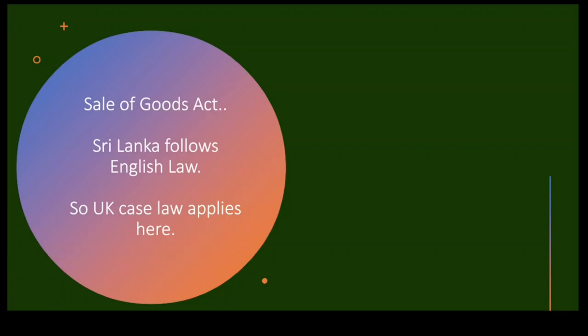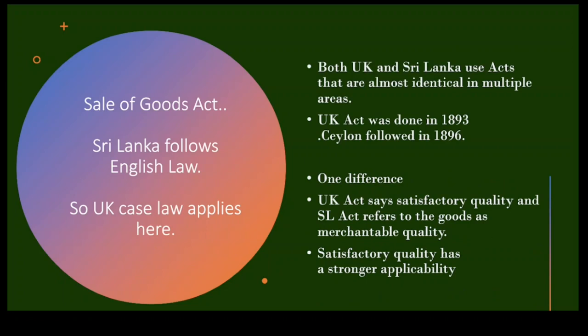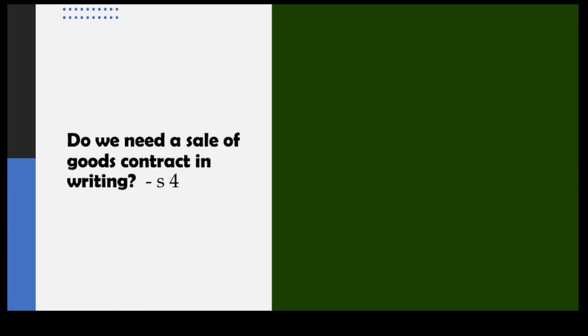A little introduction: the Sri Lankan Sale of Goods Act is completely the same as the English Sale of Goods Act. The UK version is from 1893 and the Sri Lankan one was enacted in 1896. There were some changes later, but both acts are identically the same except for a few things. The key difference is that UK law talks about 'satisfactory quality,' while the Sri Lankan act uses the term 'merchantable quality.'